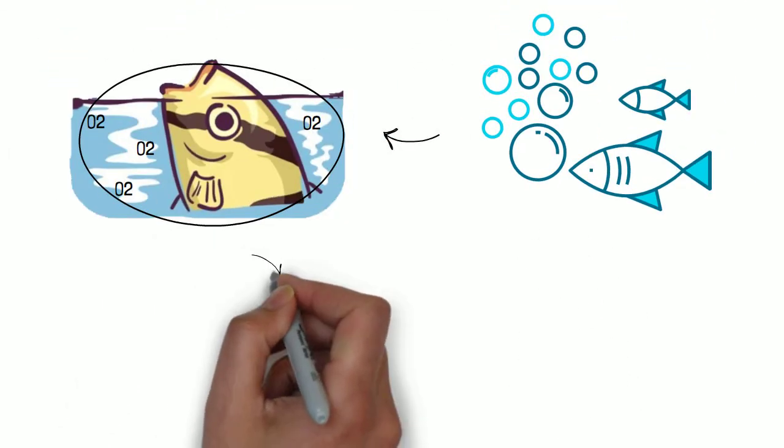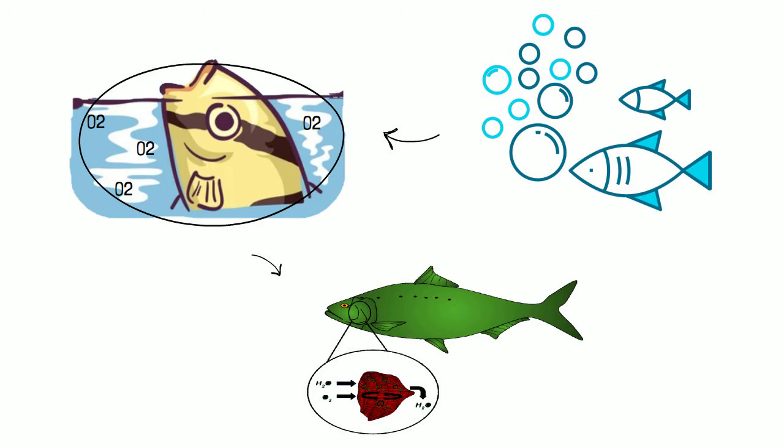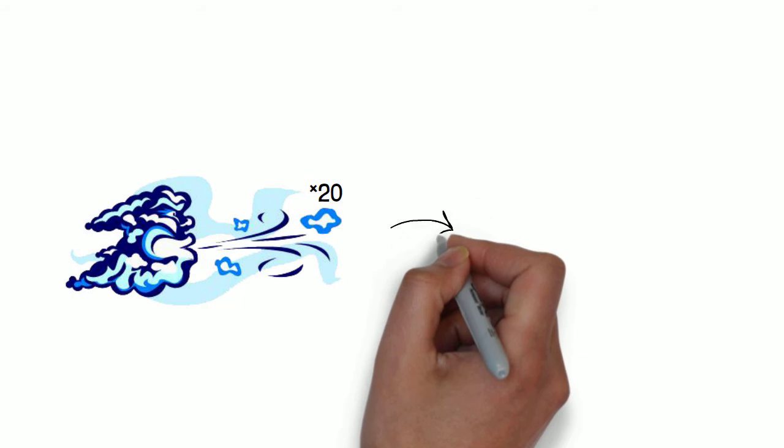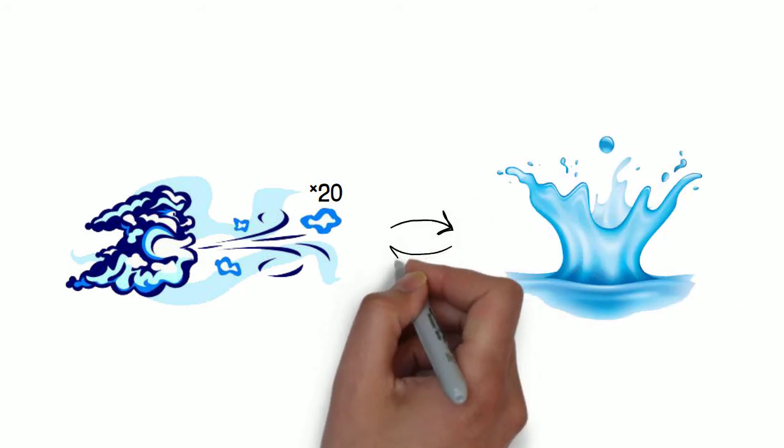Fish breathe the dissolved oxygen out of the water using their gills. It turns out that extracting the oxygen is not very easy. Air has something like 20 times more oxygen in it than the same amount of water. Plus water is a lot heavier and thicker than air, so it takes a lot more work to move it around.